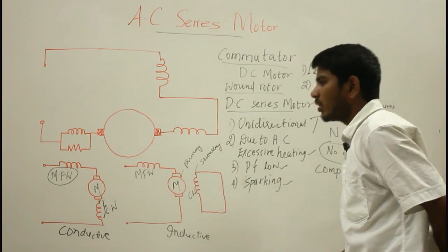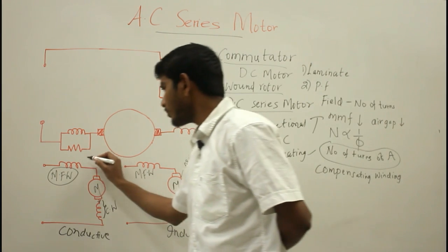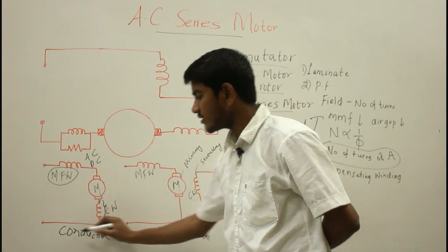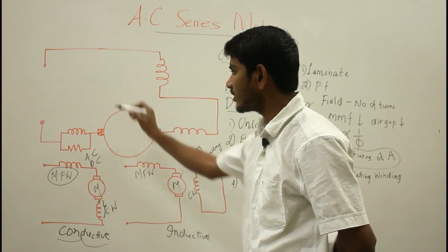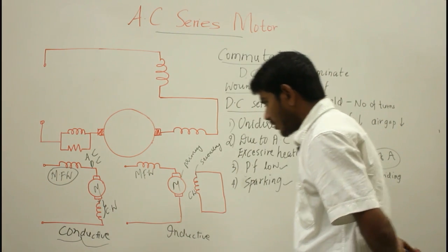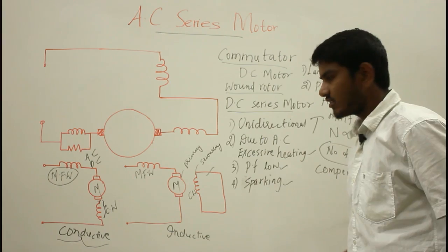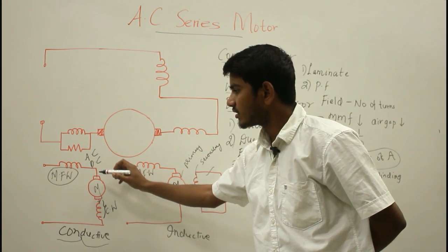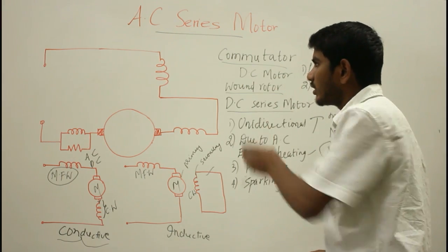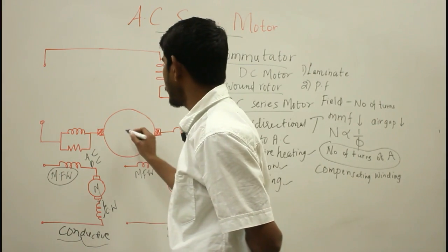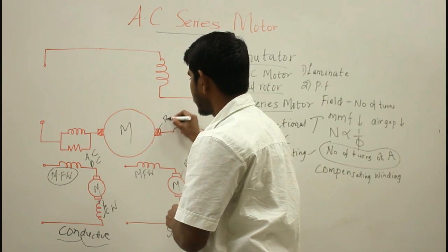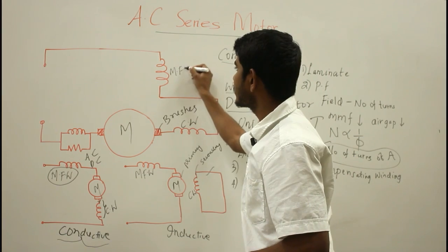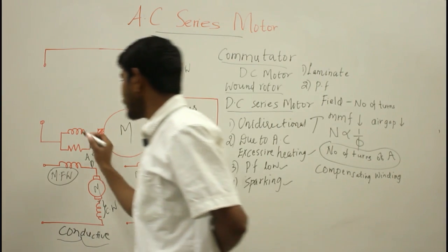The compensating winding cannot neutralize the main field winding flux because it is necessary for the development of torque. For the motor to be used with both AC and DC supplies, the compensating winding should be in series with the motor — meaning the conductively compensated type can be used for both single phase AC and DC supply, whereas the inductively compensated type is used for single phase AC supply only, since transformer action is involved.